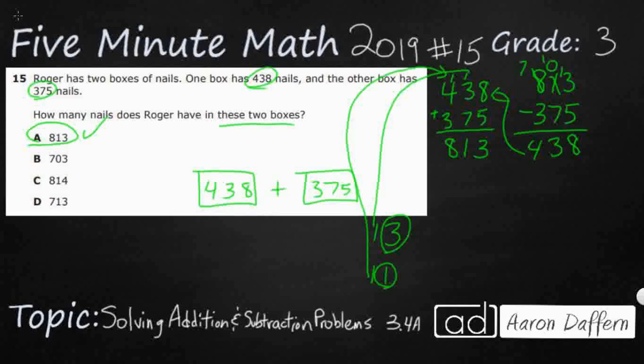Now how do we get some of these incorrect answers? Well, watch what happens if we do 438 plus 375. What if I don't regroup? What if I just say 8 and 5 is 13, but I can only put the 3 there, and that 1 just goes away. 7 and 3 is 10. I don't know where to put the 1, so I'm just going to have it go away. And then 4 and 3 is 7. And look, there's my 703. My 703 is right here. That's if you don't regroup anything. We know that's incorrect.